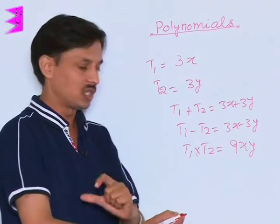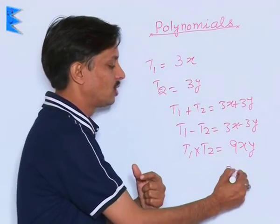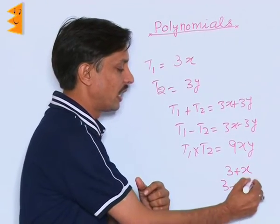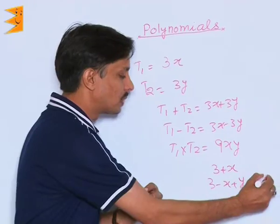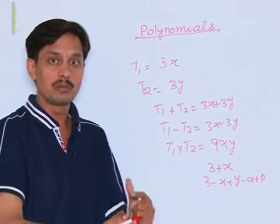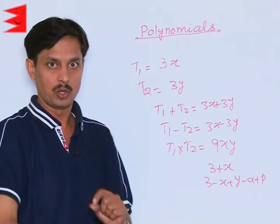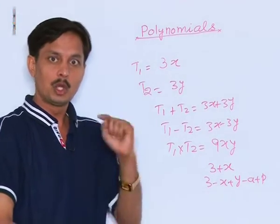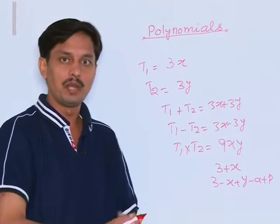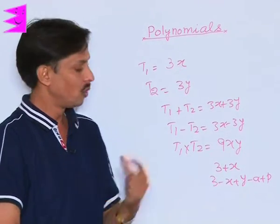So algebraic expression could be like 3 plus x, or 3 minus x plus y minus a plus p. What it means is that when two or more unlike terms are separated by plus or minus sign, what we obtain is known as the algebraic expression.